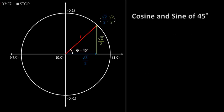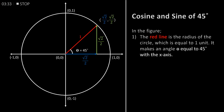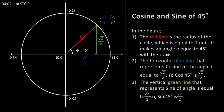Cosine and sine of 45 degrees. In the figure, the red line is the radius of the circle which is equal to one unit. It makes an angle theta equal to 45 degrees with the x-axis. The horizontal blue line that represents cosine of the angle is equal to half of square root of 2, so cos of 45 degrees is equal to half of square root of 2. The vertical green line that represents sine of the angle is equal to half of square root of 2 as well, so sine of 45 degrees is equal to half of square root of 2.